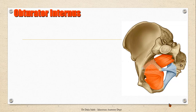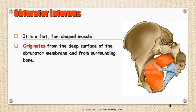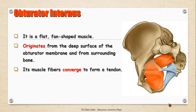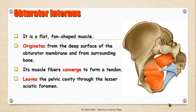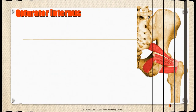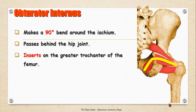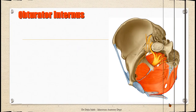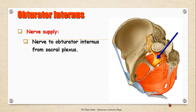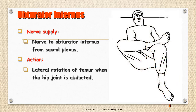For the muscles at the lateral wall of the pelvis, we have the obturator internus muscle. It is a flat fan-shaped muscle that takes origin from the deep surface of the obturator membrane sealing the obturator foramen and also from the surrounding bones. Its muscle fibers converge to form a tendon that leaves the pelvis through the lesser sciatic foramen, makes a 90-degree bend around the ischium, passes behind the hip joint, and inserts into the greater trochanter of the femur. Its nerve supply is from the sacral plexus through the nerve to obturator internus, and it acts as a lateral rotator of the femur when the hip joint is abducted.